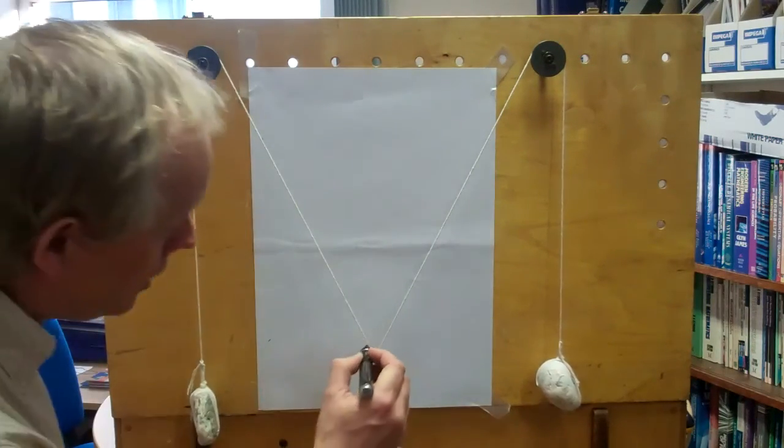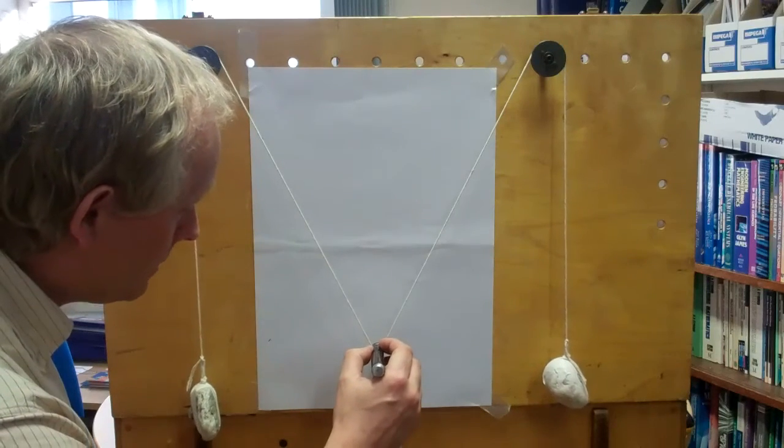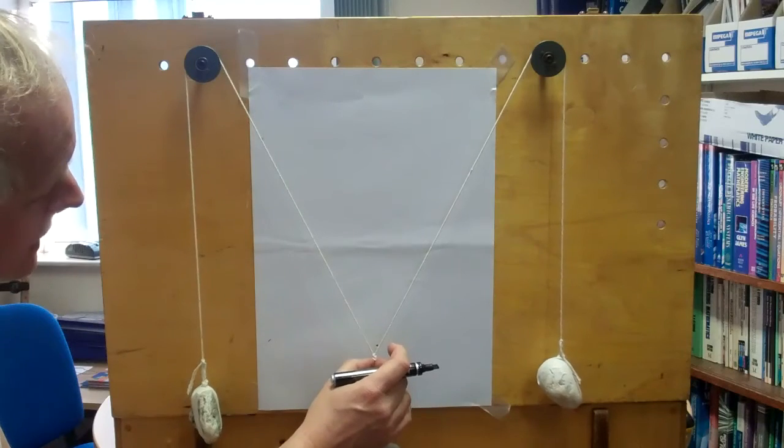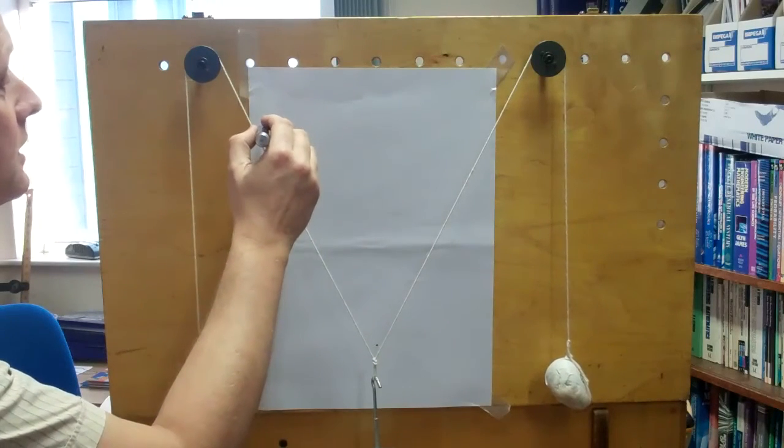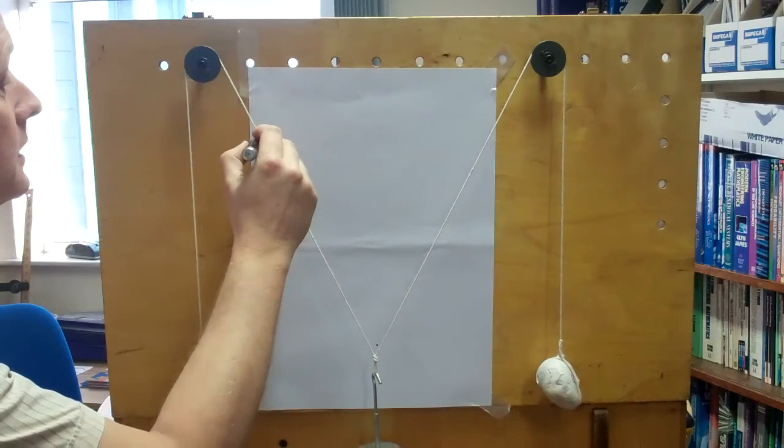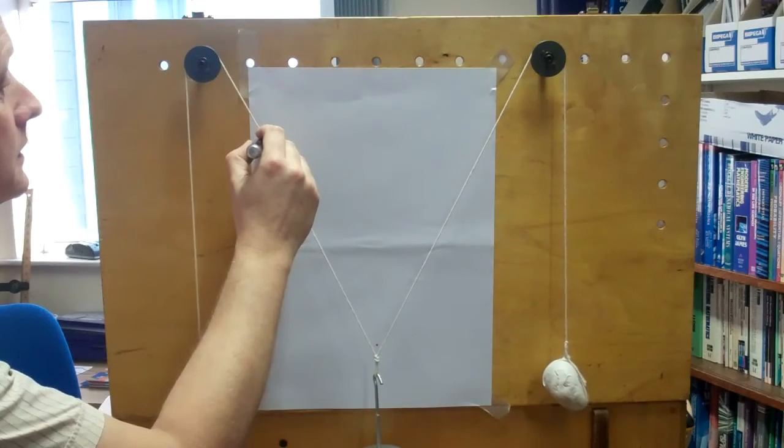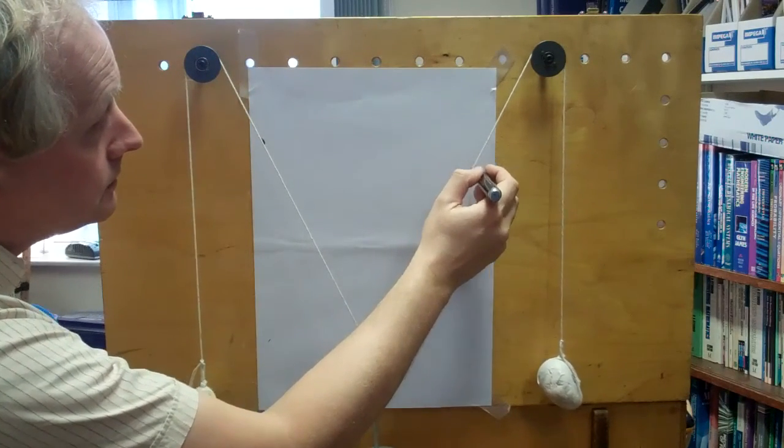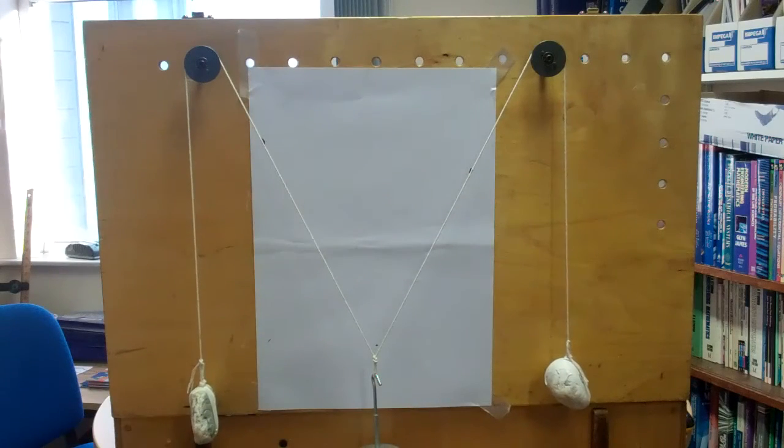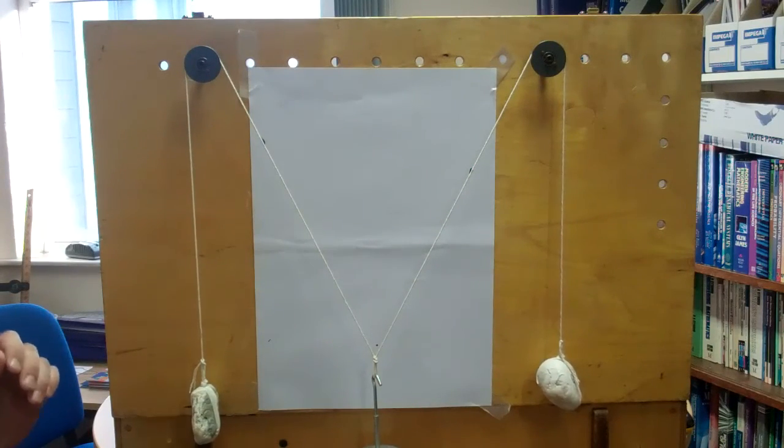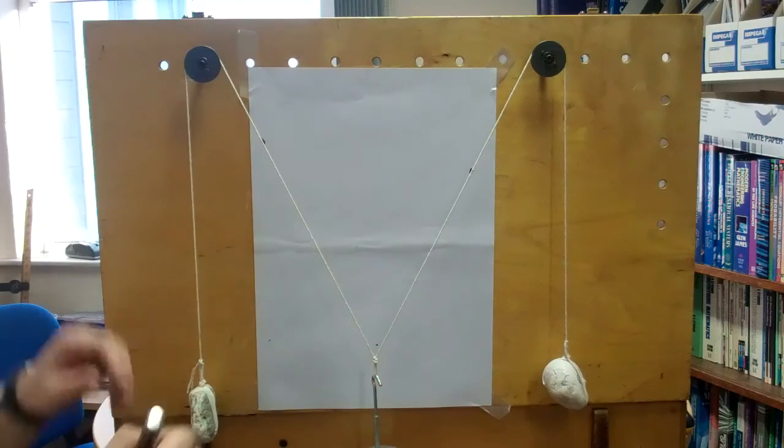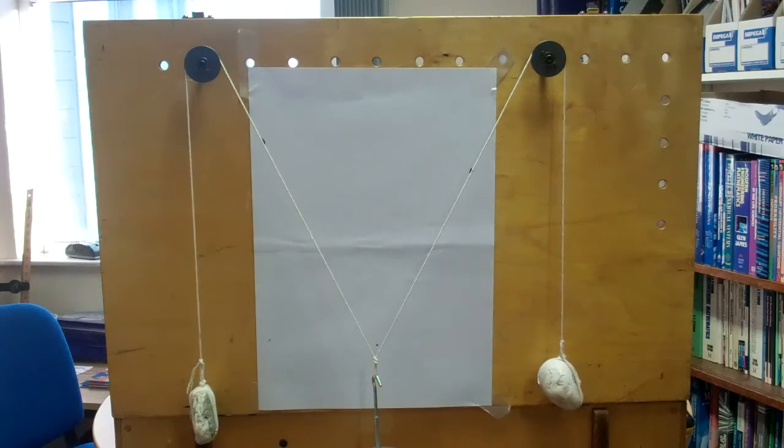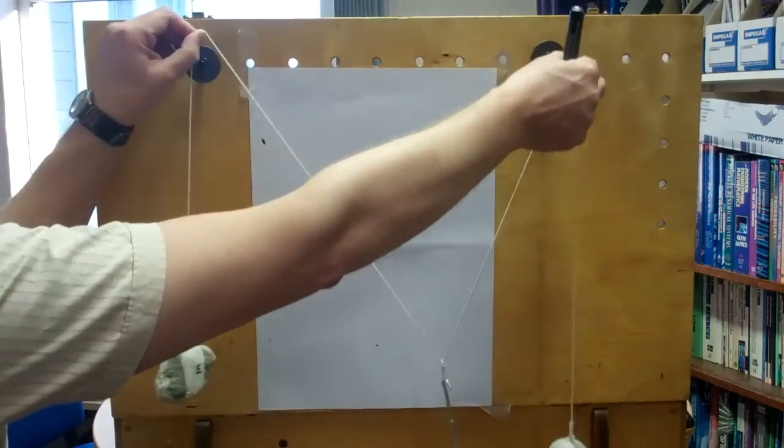place some marks on here. First of all, we're going to mark the point there where the strings intersect, and then we're also going to mark up here where the strings go. Now once we've got the marks on there, it's relatively easy for me to remove the strings and then we can draw a diagram on the paper that's behind. Okay, so there go the strings.